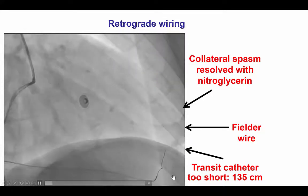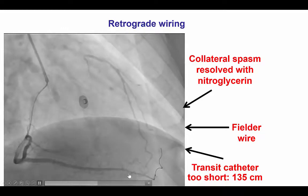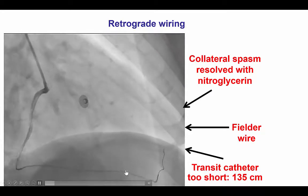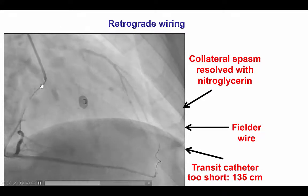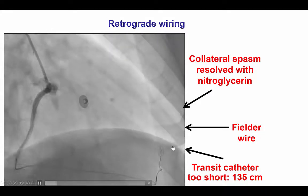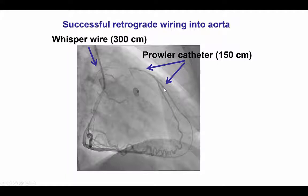We then tried to go retrograde through the epicardial collateral, and we soon found out many things. The first was that the microcatheter we used was too short — we used a 135 cm long Transit catheter. We now know we should use long microcatheters, that is 150 cm, and also use short guide catheters so that there is more room for the microcatheter and wires to be advanced. Despite that, we were able to advance the wire to the mid-LAD, and we found a 150 cm Prowler microcatheter — a neurovascular catheter — which could be advanced all the way to the mid-LAD, but not further.